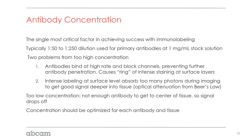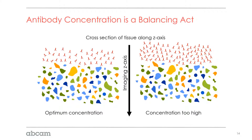Antibody concentration is really important. If we go too low, we won't get enough signal. If we go too high, we'll get signal only on the exterior of the tissue because the antibody blocks itself from penetrating in. Going too high can cause a dense ring of staining around your tissue, whereas going too low means you simply won't detect enough signal. It's a fine line between getting lots of signal and getting your antibody throughout the tissue.